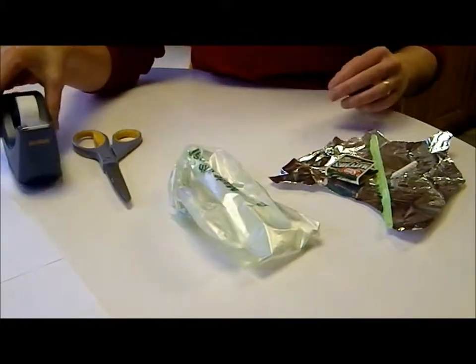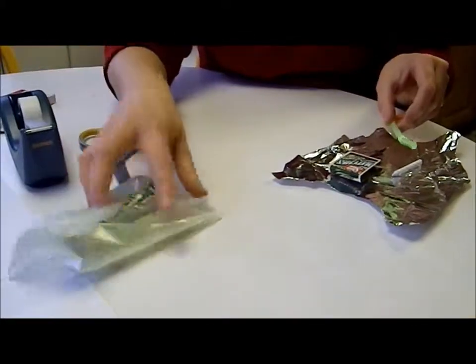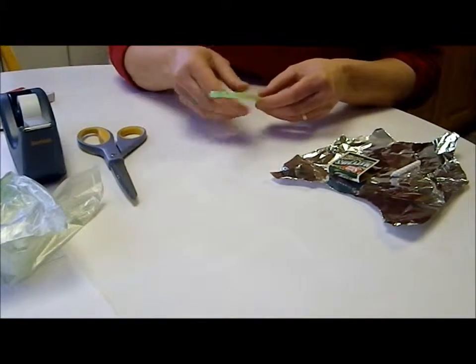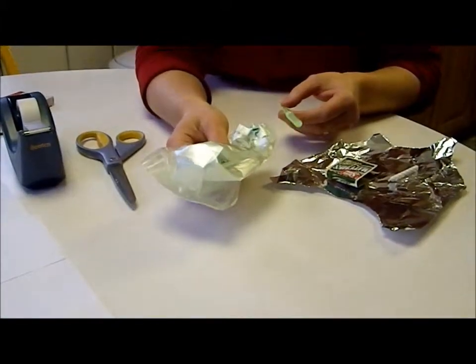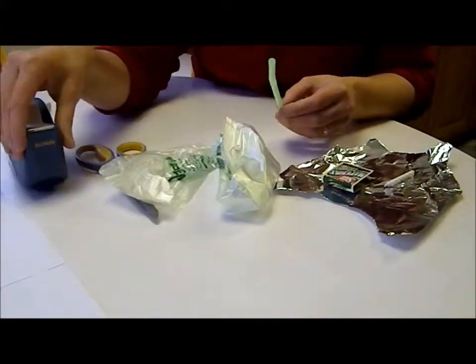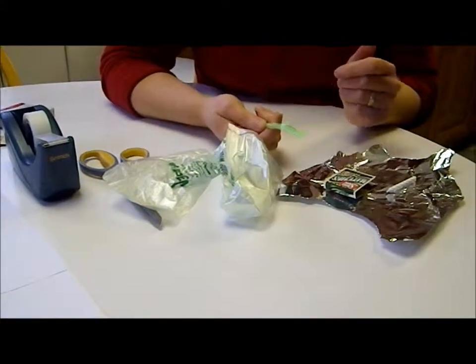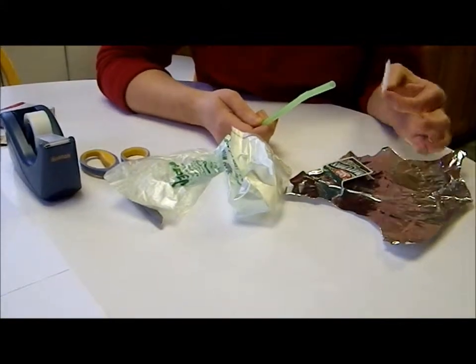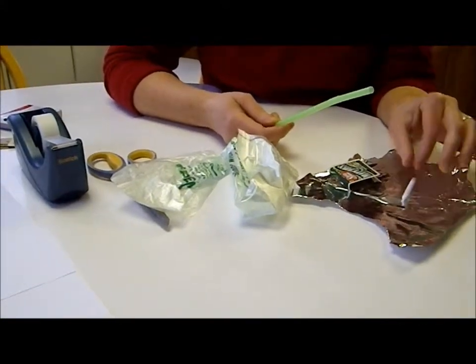Okay, today we are going to make a hot air balloon. To make the balloon, you need a produce bag from the produce aisle, scissors, scotch tape, a straw, matches, a birthday candle, and a little aluminum foil.